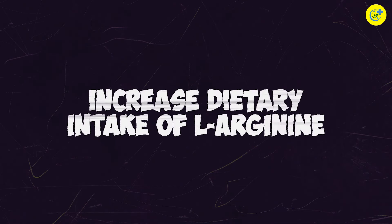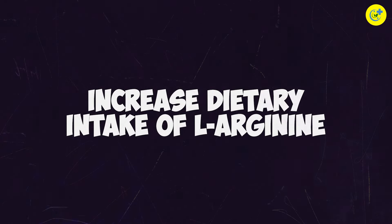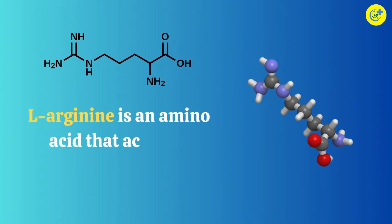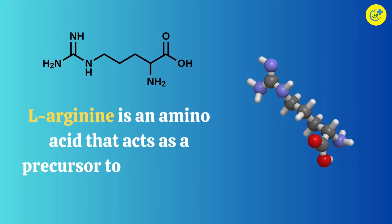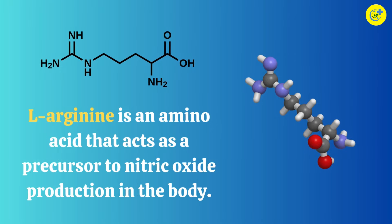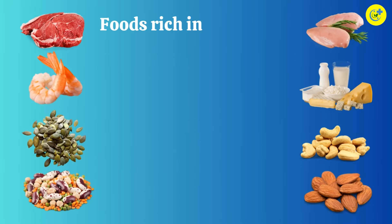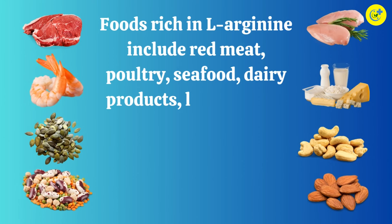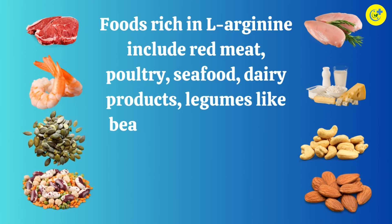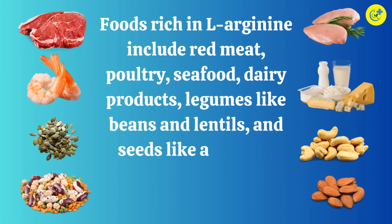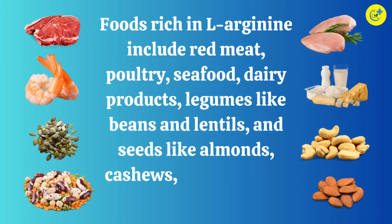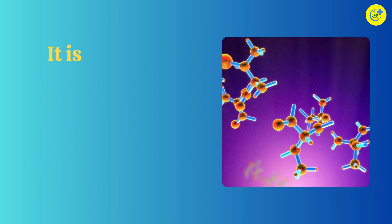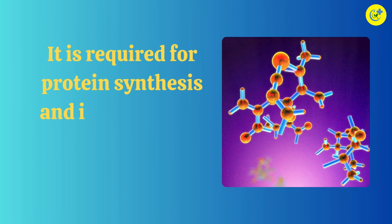As you know, exercising can give you a lot, including a good physique and a healthy body. Strategy 4 - Increased dietary intake of L-Arginine: L-Arginine is an amino acid that acts as a precursor to nitric oxide production in the body. Foods rich in L-Arginine include red meat, poultry, seafood, dairy products, legumes like beans and lentils, and seeds like almonds,